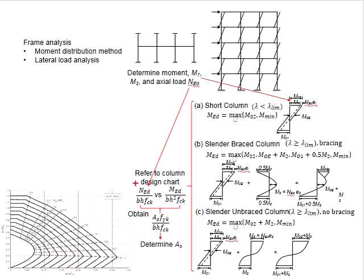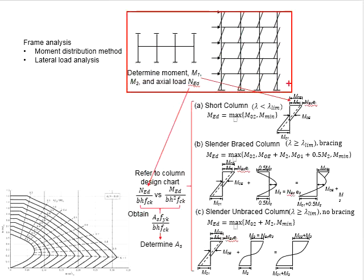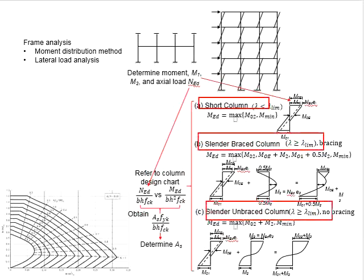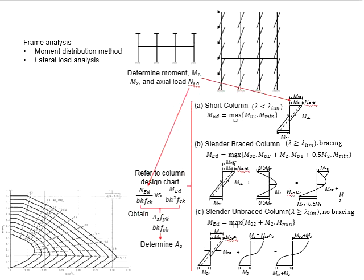In order to use the design chart, you need to determine the axial load and the moment. The axial load and moments can be obtained from frame analysis, either by the moment distribution method or by using the lateral load analysis where applicable. Superposition of results may be required. However, based on the moments obtained from the loads, you cannot use the moment directly for design — there are other considerations governed by the classification of the columns. These considerations are needed to prevent the risk of under-designing the columns. For the classification, you need to determine the slenderness ratio and also determine whether the structure is braced or unbraced.